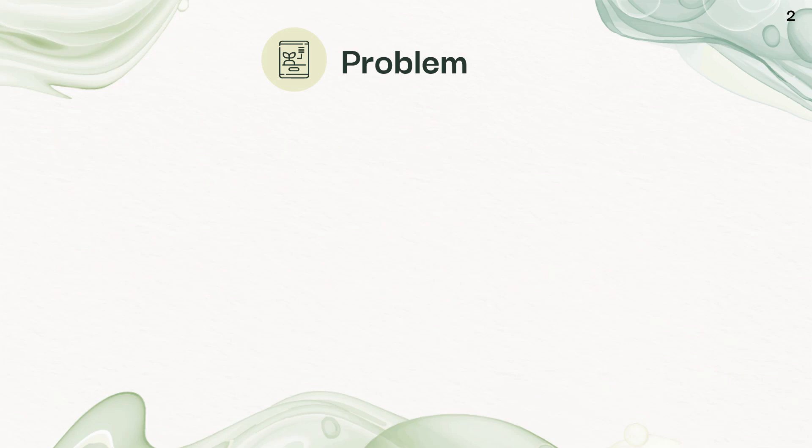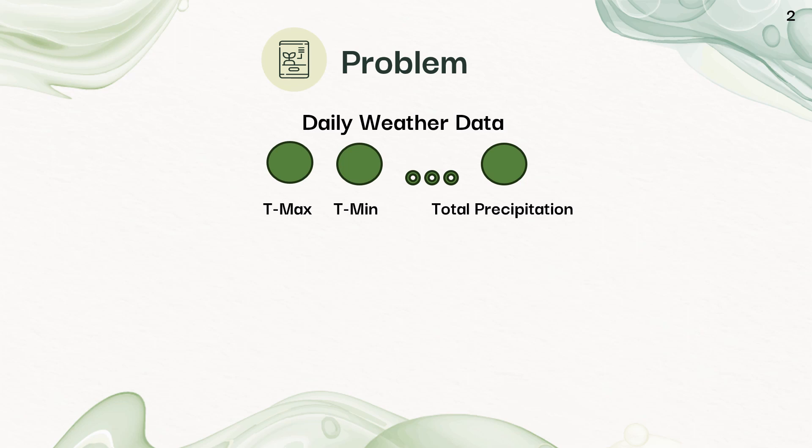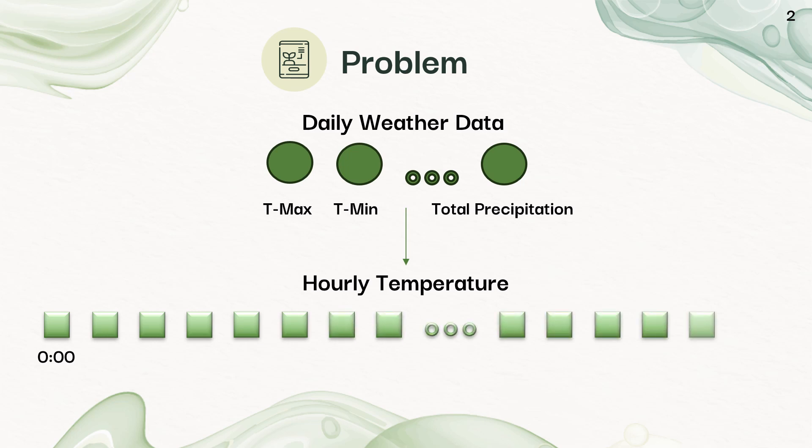The fundamental problem I'm trying to solve in this project is how to take daily weather data, like the maximum temperature, the minimum temperature, and a bunch of other factors, and generate out 24 hours of temperature readings for that given day.